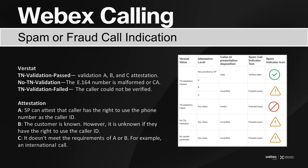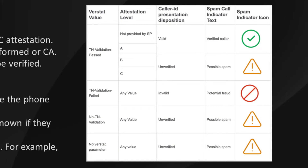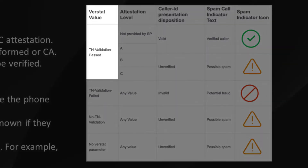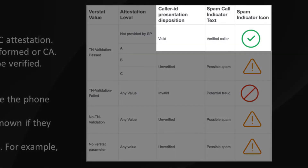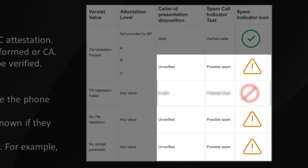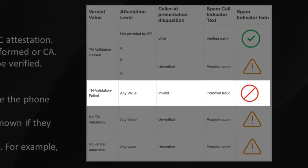When a Cisco Webex user receives an incoming call, the call is presented with additional visual information to indicate whether a call is from a verified caller or from a potential spam or fraud. If we have the verstat value as passed, the spam indicator shows a verified caller. With no validation, it is unverified and is possible spam. And if we have the verstat value as fail, it is a potential fraud.